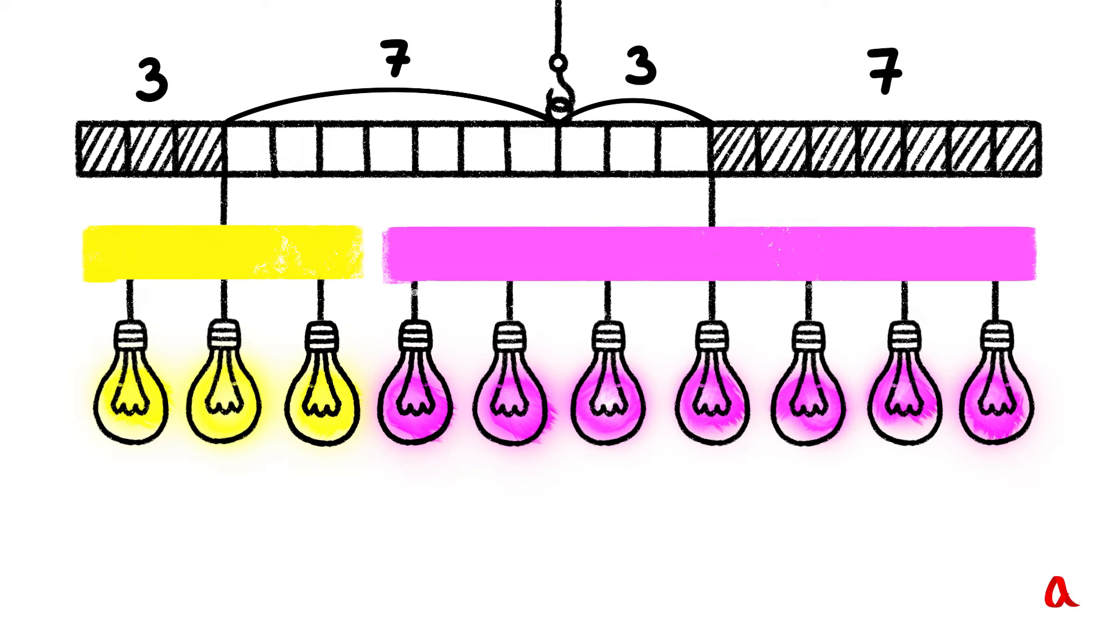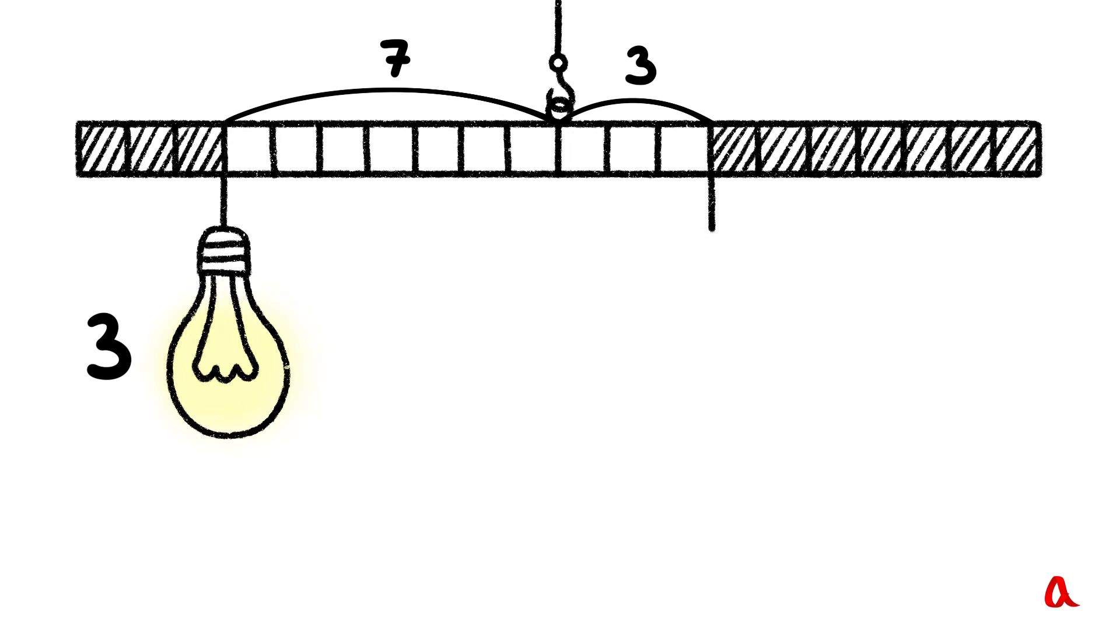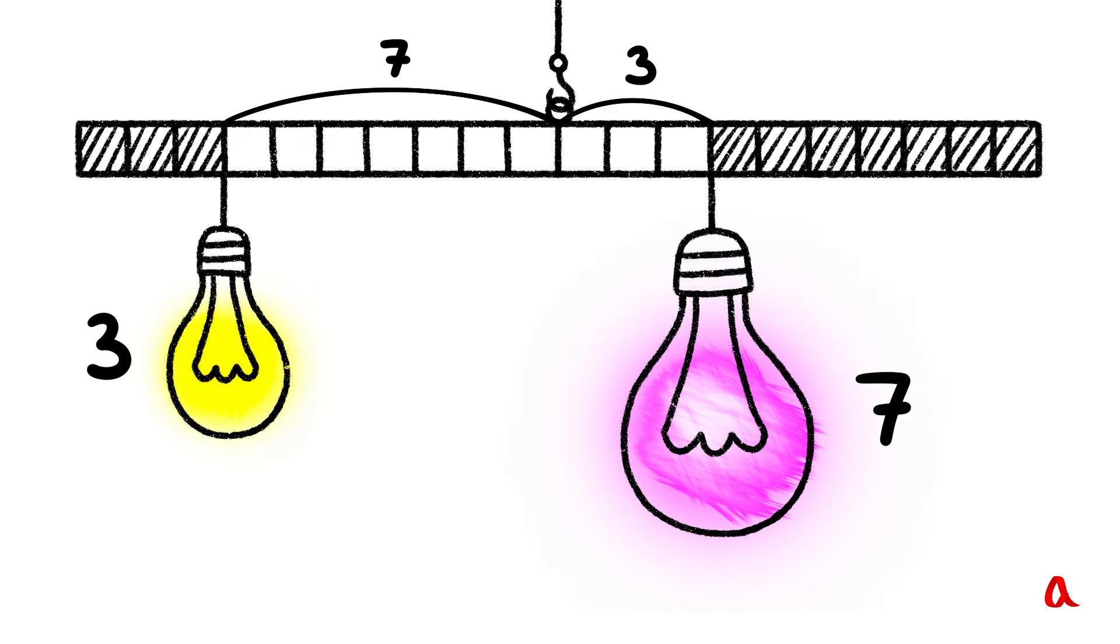Now we perform the final action. We replace 3 loads with one weighing 3 units and 7 loads with another load weighing 7 units. So it turns out that a 3-unit load is suspended by a 7-unit arm and vice versa. It goes without saying that this proof will stand for any other ratio between the loads.